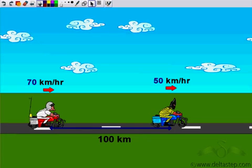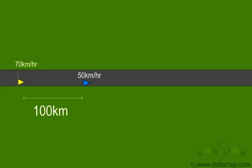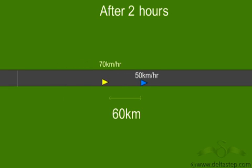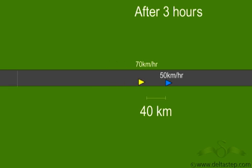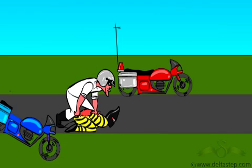Let's give them some values. The police is running at 70 km per hour and the thief is running at 50 km per hour, so x is greater than y — the speed of the police is greater than the speed of the thief. The initial distance between the two is 100 km. After one hour the distance has decreased; after two hours further decreased; after three hours further decreased; after four hours again; and after five hours the police has actually caught the thief.